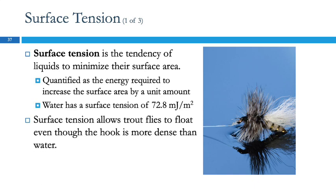Other things that float on the surface tension of water are things like trout flies or water skater bugs. In a quiet area of water, you can see these little bugs just skating on the water. How are they doing that? It's the surface tension.